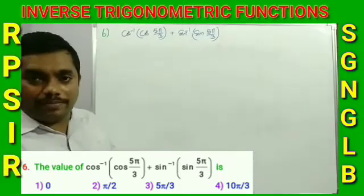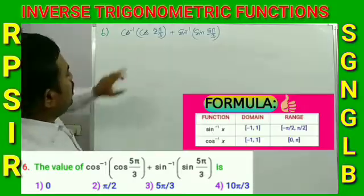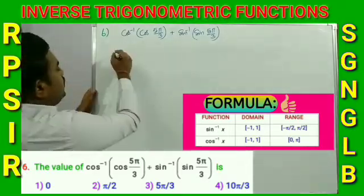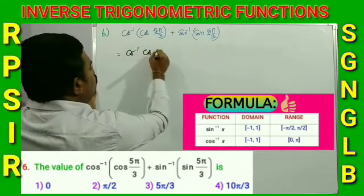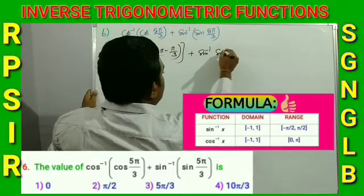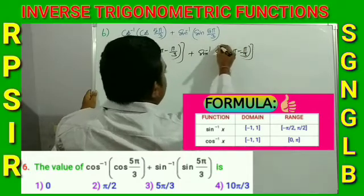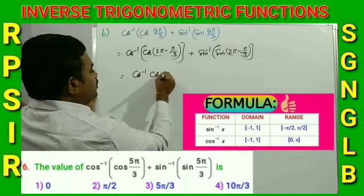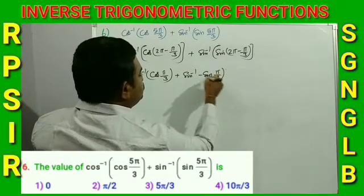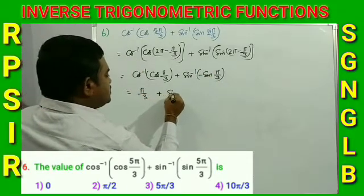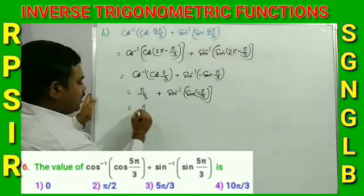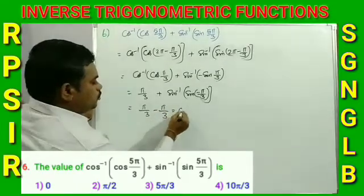Question number 6: Find the value of cos⁻¹(cos 5π/3) + sin⁻¹(sin 5π/3). Since 5π/3 is not in [0, π] for cos⁻¹ or [-π/2, π/2] for sin⁻¹, we rewrite: cos⁻¹(cos(2π - π/3)) + sin⁻¹(sin(2π - π/3)) = cos⁻¹(cos π/3) + sin⁻¹(sin(-π/3)) = π/3 - π/3 = 0. Option 1 is the correct answer.